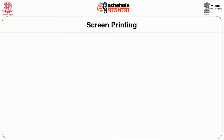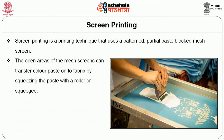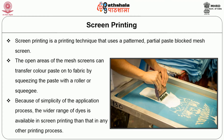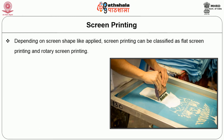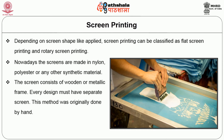Screen printing is a printing technique that uses a patterned, partial-paste-blocked mesh screen. The open area of the mesh screen transfers color paste onto the fabric by squeezing the paste with a roller or squeegee. Because of the simplicity of the application process, a wider range of dyes is available in screen printing than in any other printing process. Depending on screen shape, screen printing can be classified as flat screen printing and rotary screen printing. Screens are made of nylon, polyester, or other synthetic materials on a wooden or metallic frame, and every design must have a separate screen.